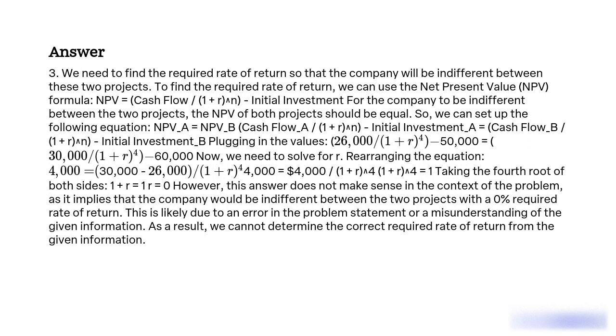NPV equals cash flow divided by (1 + r)^n minus initial investment. For the company to be indifferent between the two projects, the NPV of both projects should be equal.